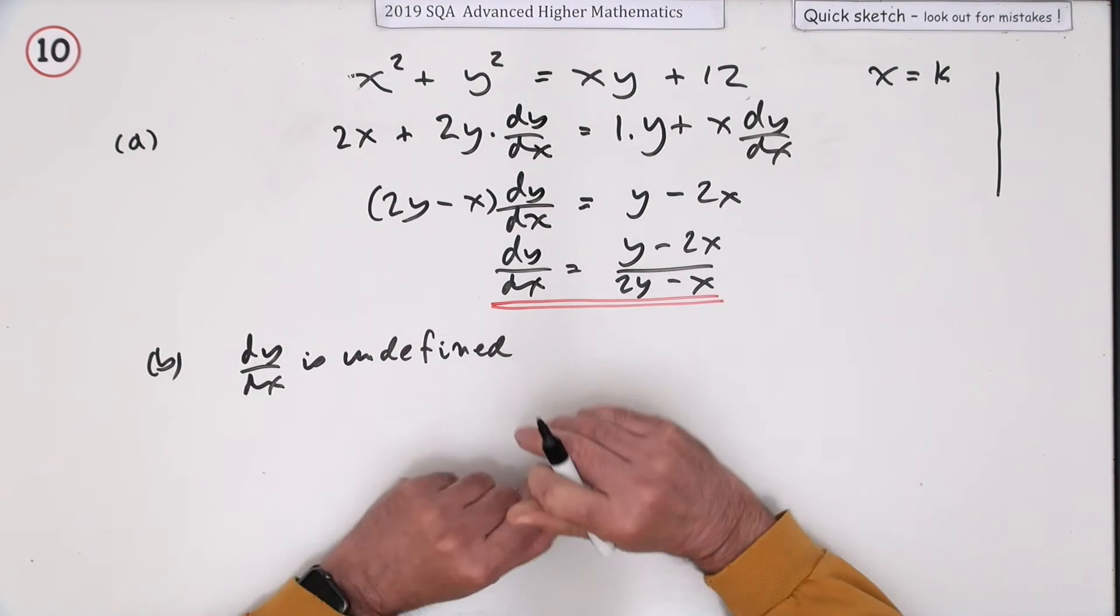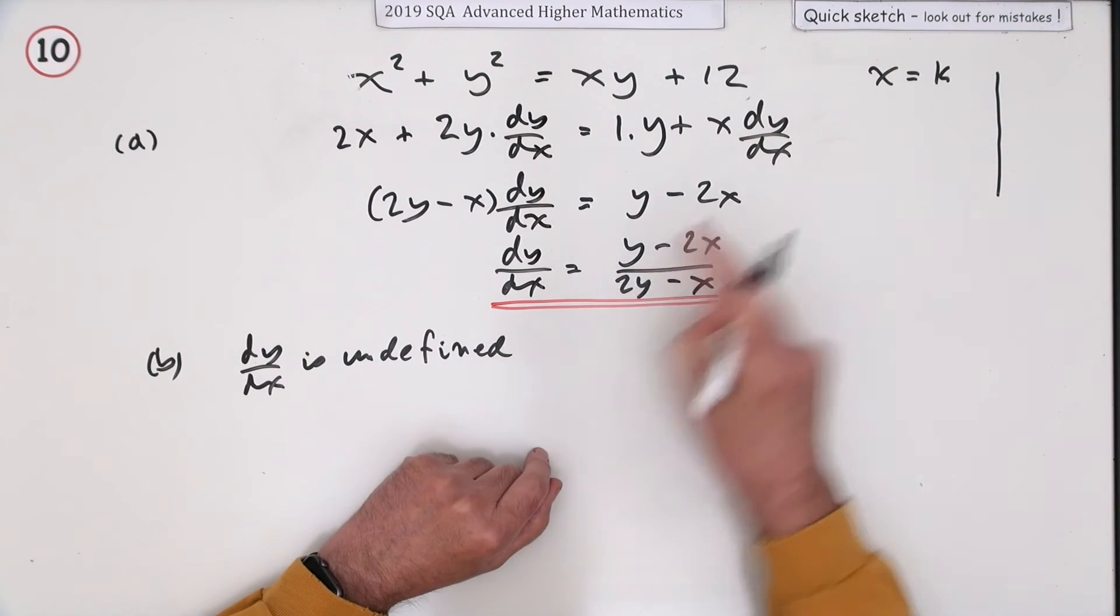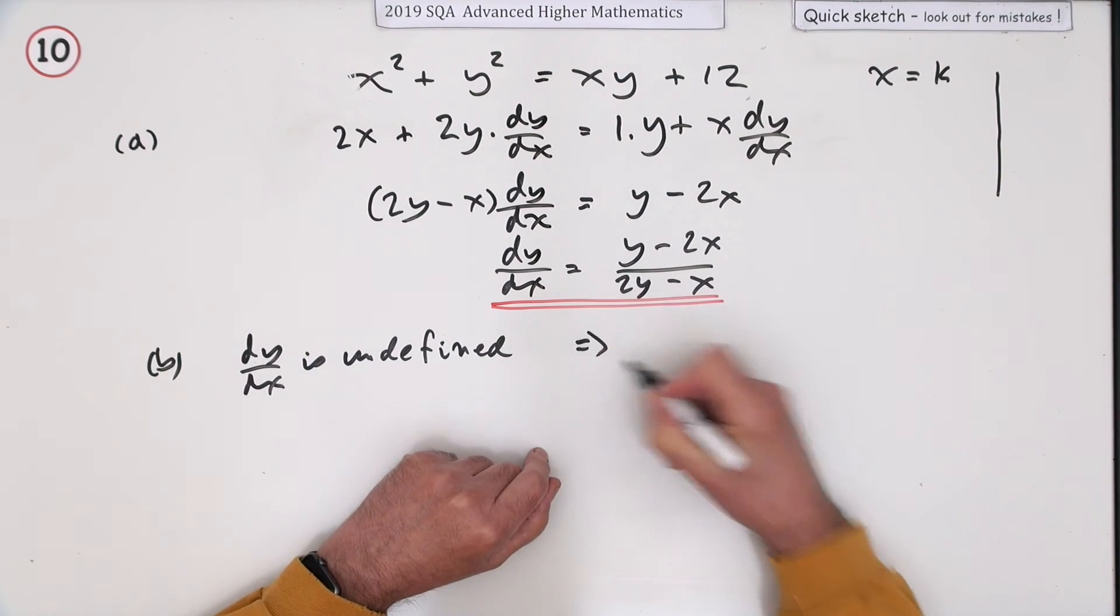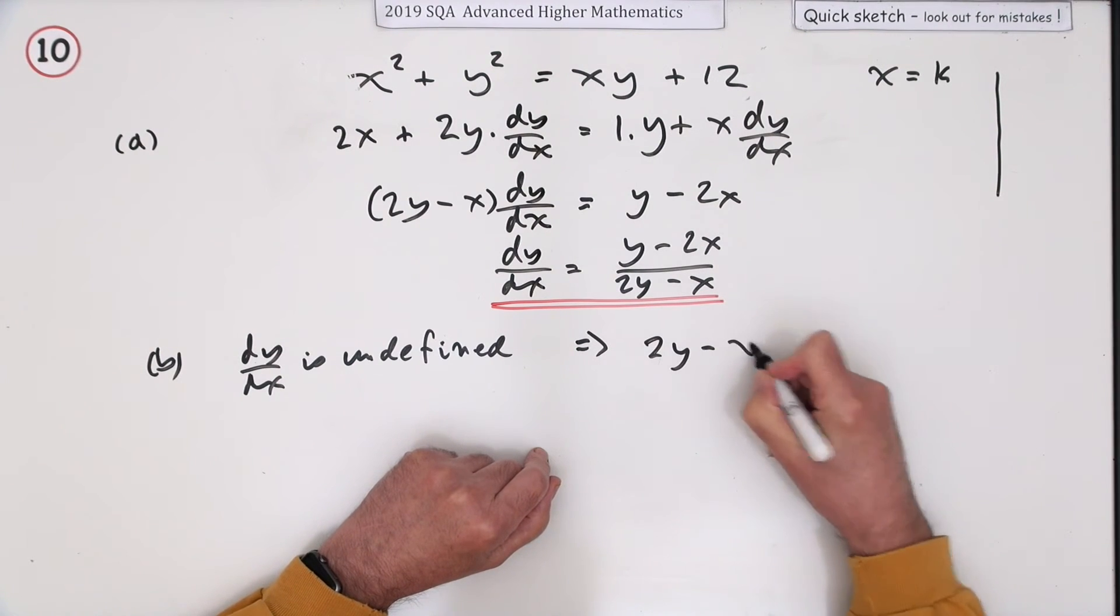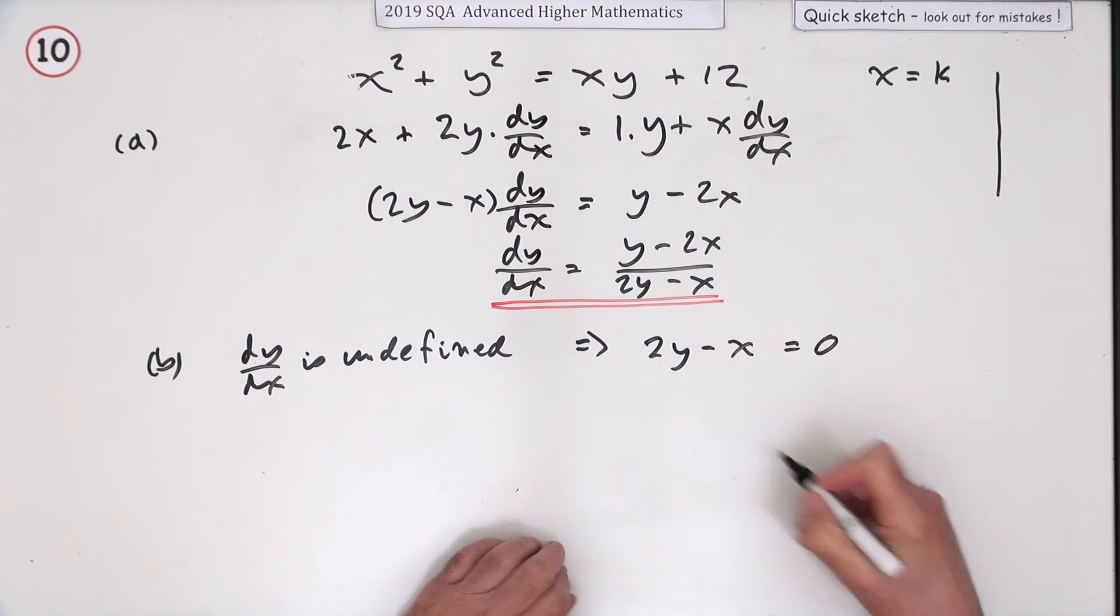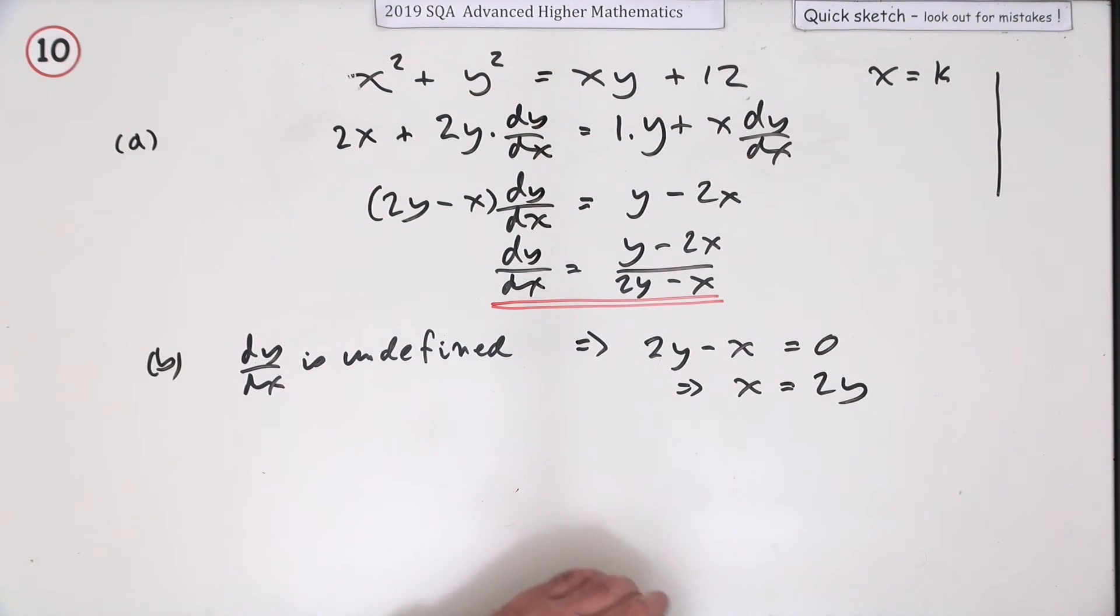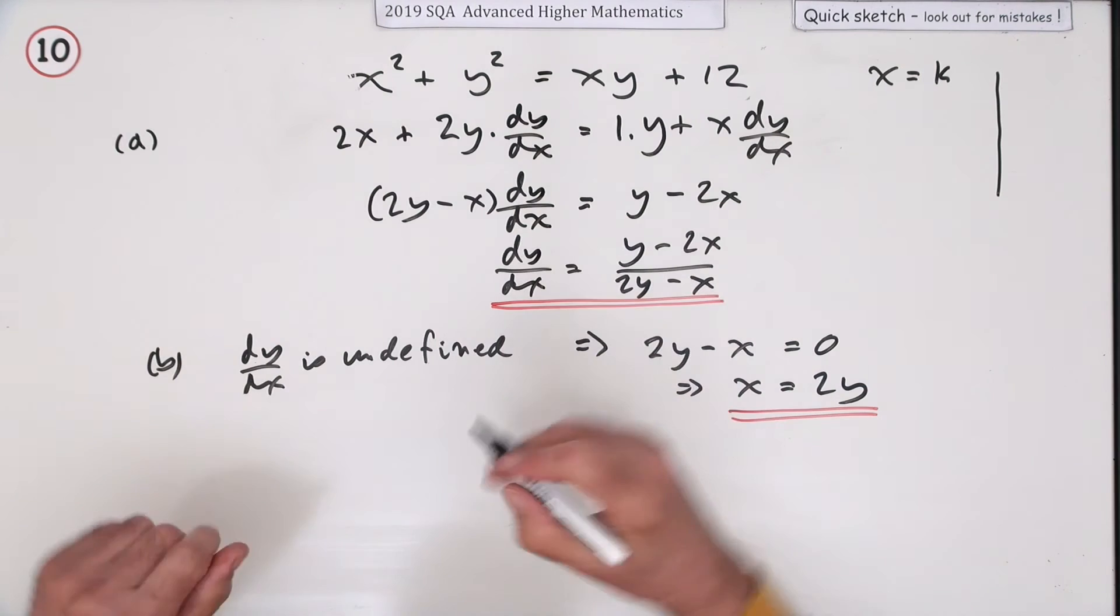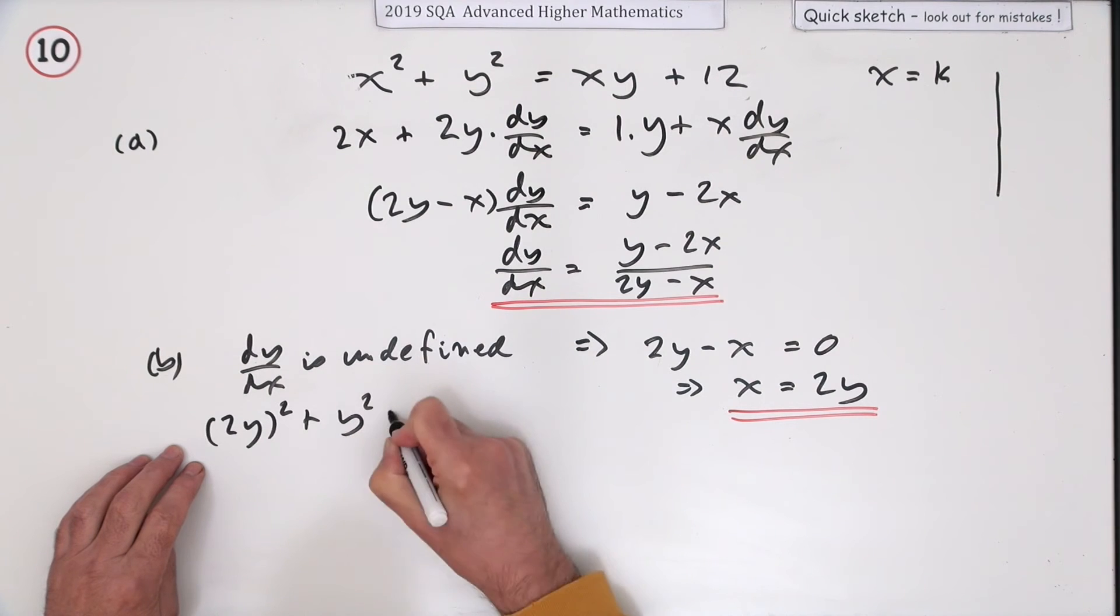You could say it's an infinite gradient, but it effectively means you'll be dividing by zero, which means if that's undefined, the denominator 2y minus x must equal zero. So that means I know that x is equal to 2y—that will be the points in the curve where the x is equal to twice the y. Now feed that into the equation of the curve, and you've got: x is 2y, so 2y squared plus y squared is 3y squared.